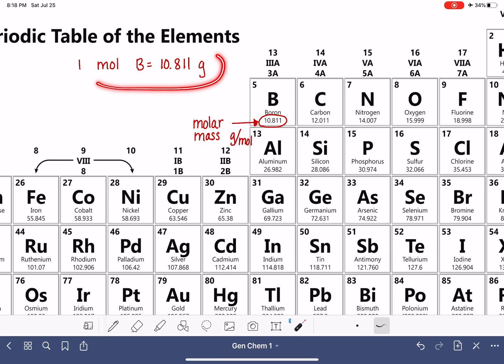If we wanted to use this like a conversion factor, we would just turn it into a fraction. We could say one mole of boron per 10.811 grams of boron. Or we could write it the other way around. 10.811 grams of boron is one mole of boron.